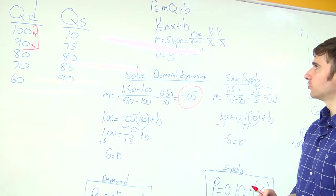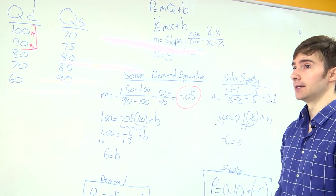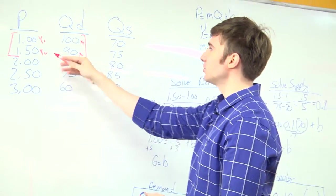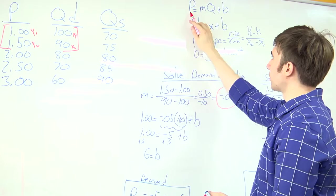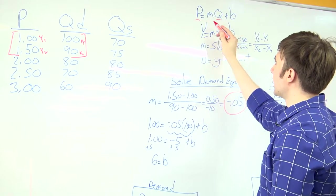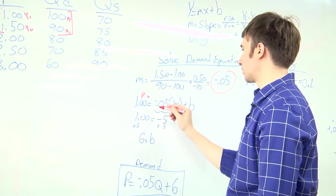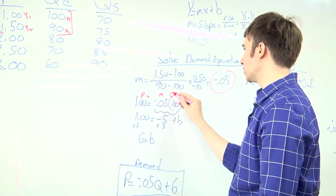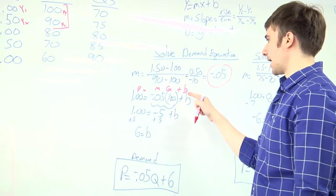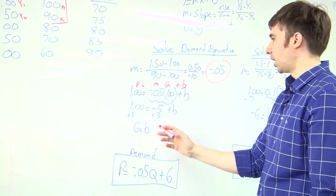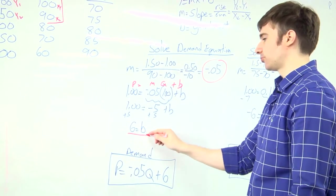Once I have slope, now I want to solve for b. So I'm going to choose one of these points to plug in for p and q and I already have m. I plug in these three values and now I need to solve for b. I'll end up with b equals 6.